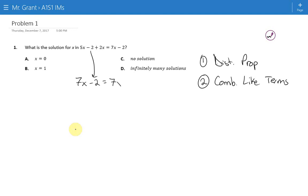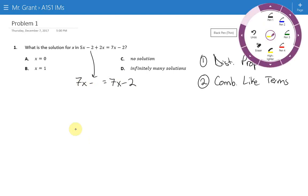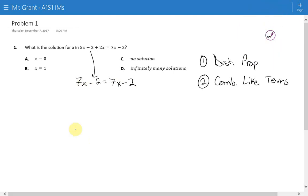The other side, there are no like terms, so it stays like so. At this point, you actually should be able to stop on this problem, because you might recognize that the left side and the right side are exactly the same. And whenever that happens, because we're trying to find a number that makes the left side equal to the right side, that tells us that this will be infinitely many solutions. Any number you plug in for x will make the left side and the right side equal.